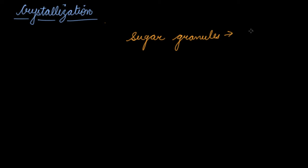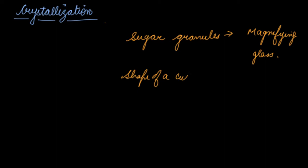Now, take some sugar grains in a plate and look at the sugar granules through your magnifying glass. You will see the basic shape of all the sugar granules — the shape of a cube. Your sugar has the shape of a cube.